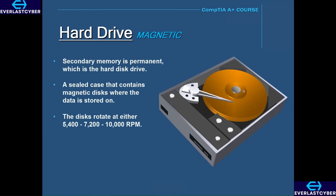These magnetic disks can rotate at speeds of either 5,400, 7,200, or 10,000 RPM. The typical hard drive used today in a desktop operates at 7,200 RPM. Cheaper desktop hard drives would typically operate at the 5,400 RPM range, which is also the speed of a typical laptop hard drive.